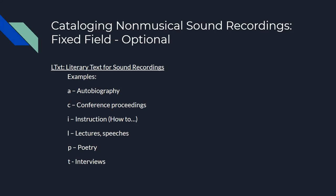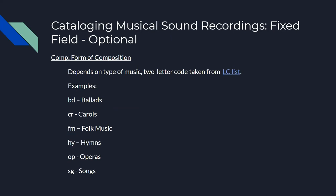The other optional element is form of composition for musical sound recordings. Form of composition is a two-character code that identifies the form of music on the recording. The codes are assigned from a controlled vocabulary created by the Library of Congress. Examples include ballads, carols, folk music, hymns, operas, and songs. There's quite a long list, and it's linked in the slide.